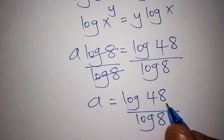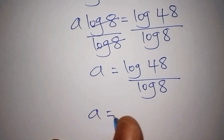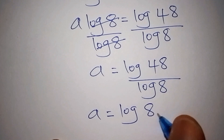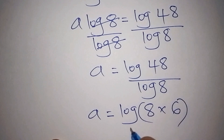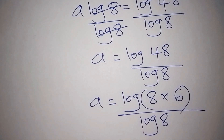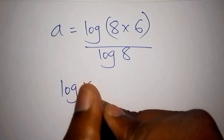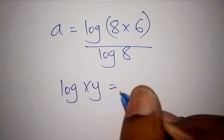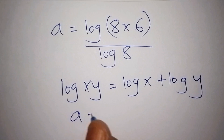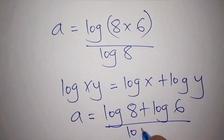We can still factorize further. A equals log of 48 over log of 8. Now 48 can be written as 8 multiplied by 6, so log of 48 becomes log of (8 times 6), all over log of 8. According to the law of logarithms, log of x times y equals log of x plus log of y. So A equals log 8 plus log 6, all over log 8.